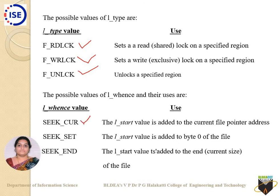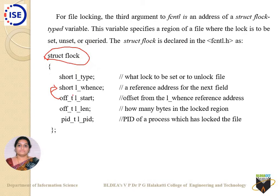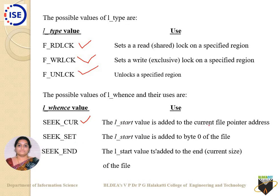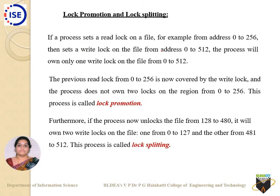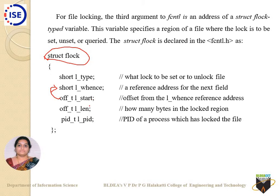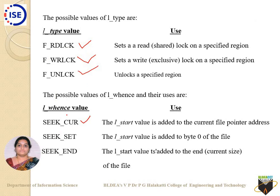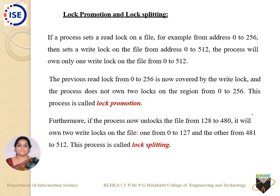l_whence specifies the reference using SEEK_CUR, SEEK_SET, or SEEK_END — the same as in lseek. SEEK_CUR adds l_start to the current file pointer position. SEEK_SET adds l_start to byte zero of the file. SEEK_END adds l_start to the end of the file (current file size). l_len is used for querying how many bytes are in the locked region, and l_pid helps in querying which process ID has set the lock.